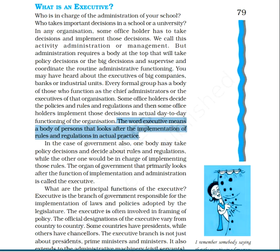For example, if there are certain traffic rules passed by the Government of India — say, that people using a car should wear a seatbelt — not every leader will go to the road to enforce this. We have a body, the traffic police personnel, who implement these rules and regulations passed by the Government of India. The organ of government that primarily looks after implementation and administration is called the Executive.